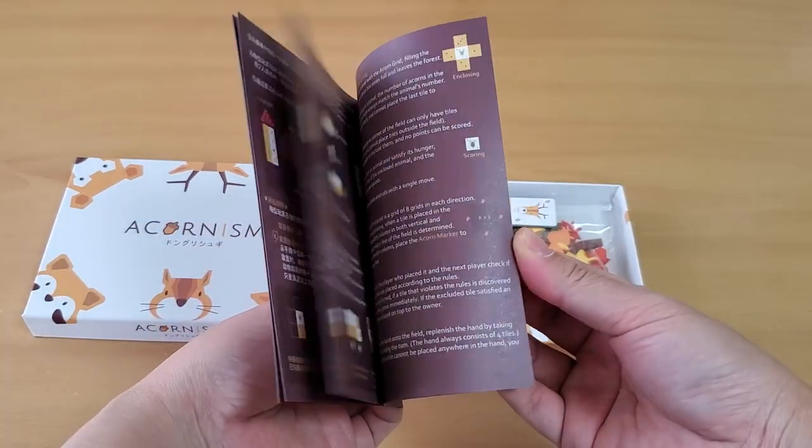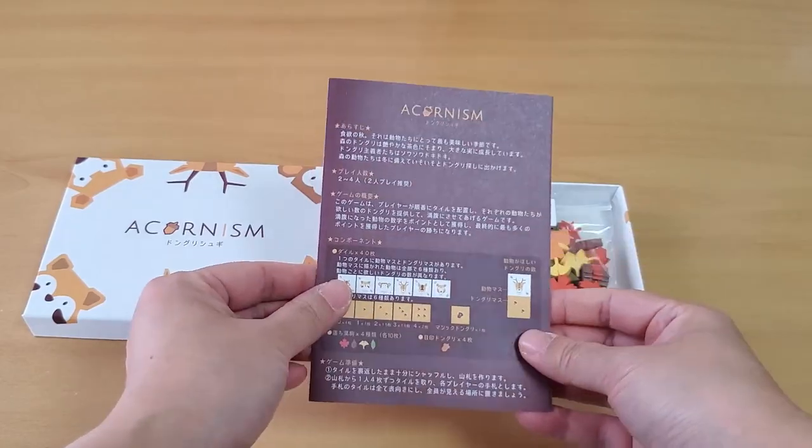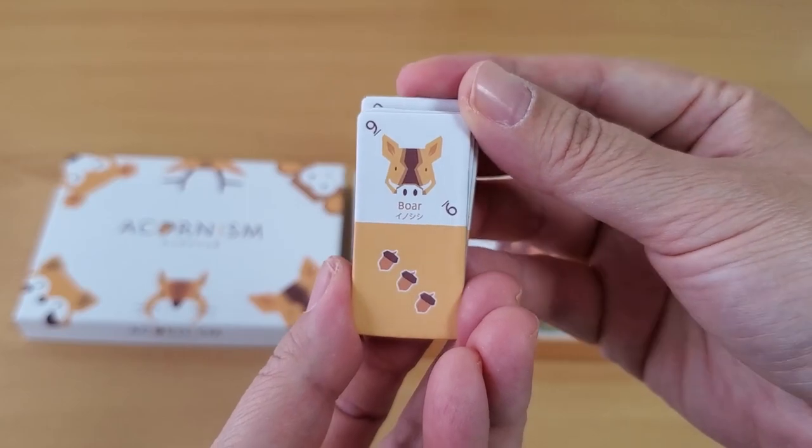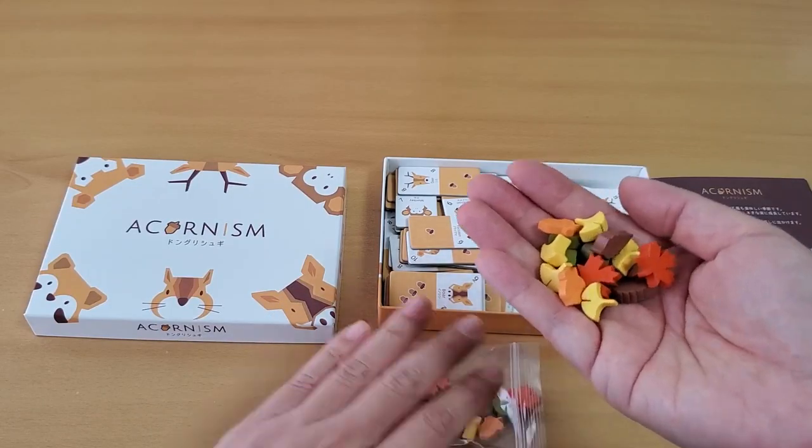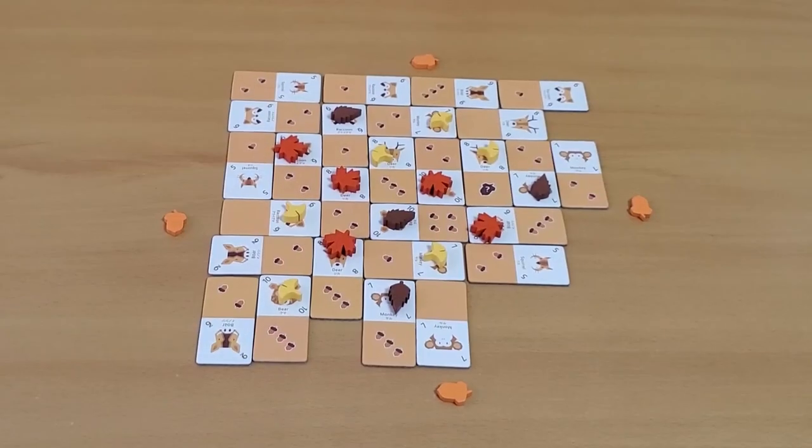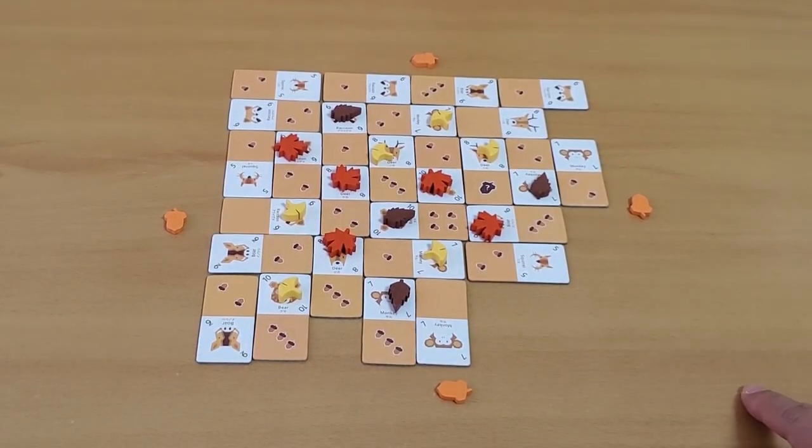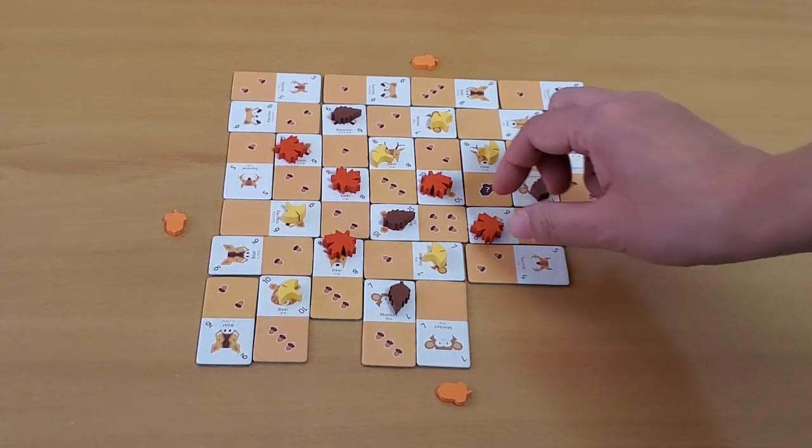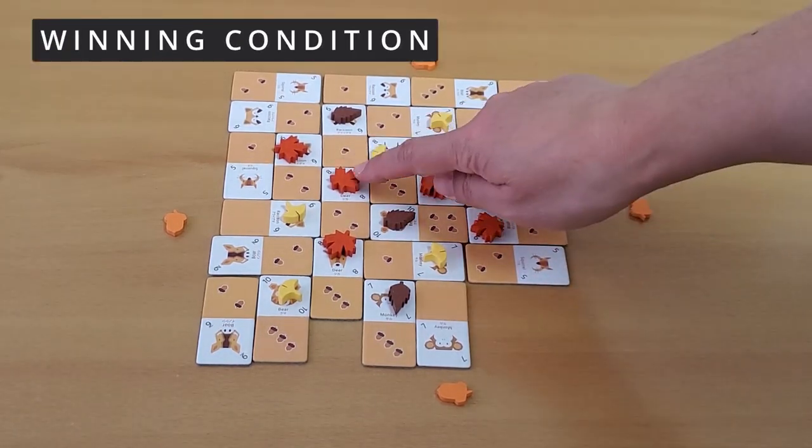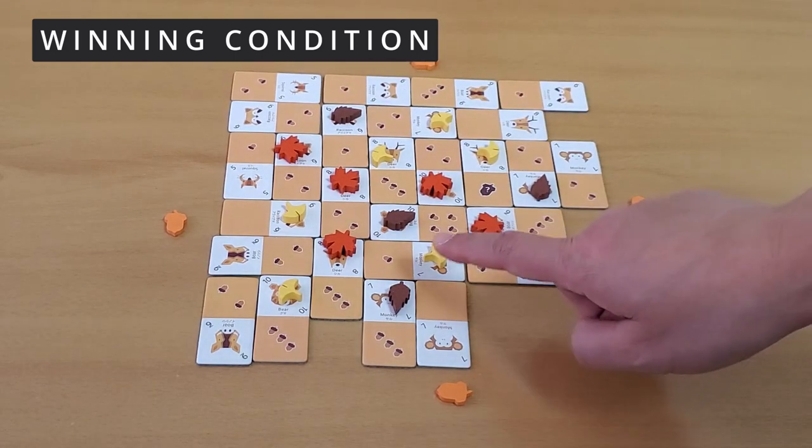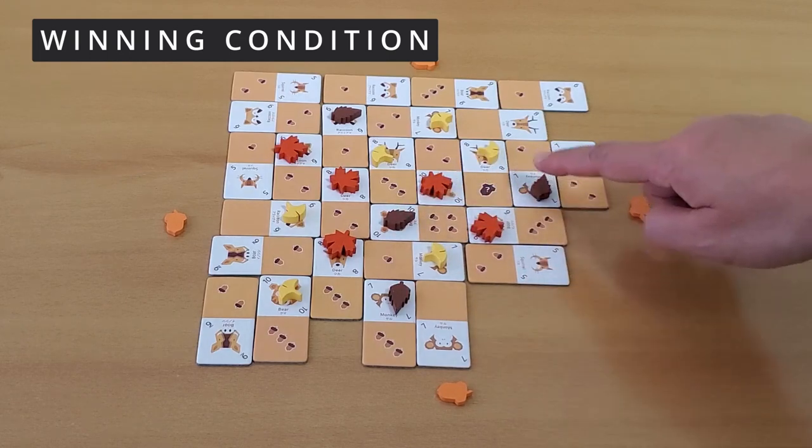In Acornism, the cute forest animals are gathering acorns in autumn to help them come through the cold winter season. This game plays in about 15-20 minutes, and it's played in an 8x8 space grid. Depending on how the tiles are laid out, the grid can grow in either direction until it reaches the 8x8 size. The game ends once all players are unable to place any more tiles. Whomever has the highest score from the forest animals that were completely surrounded by acorns wins.